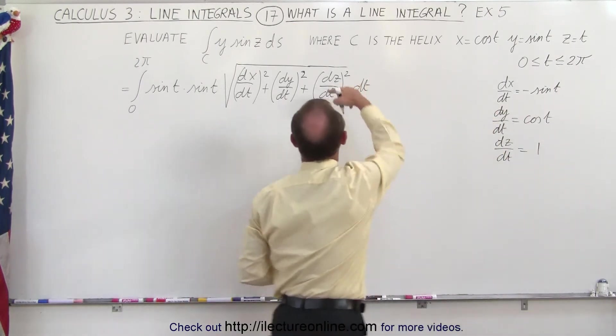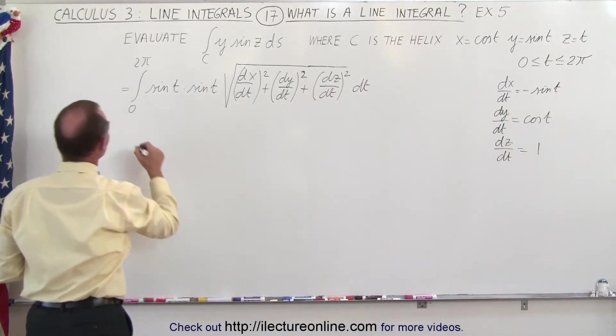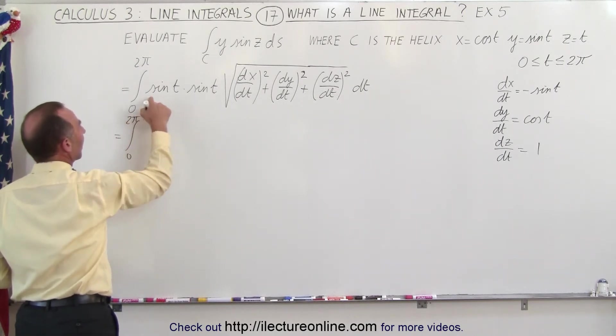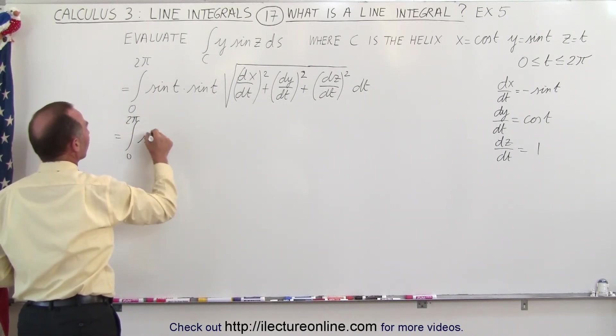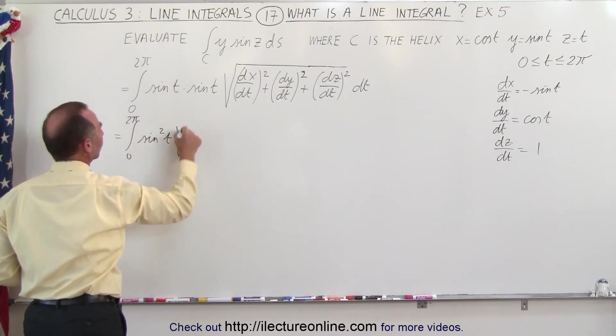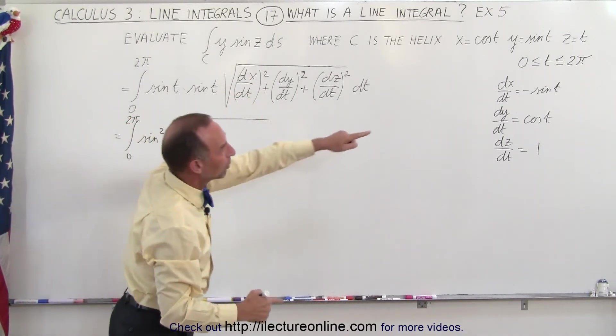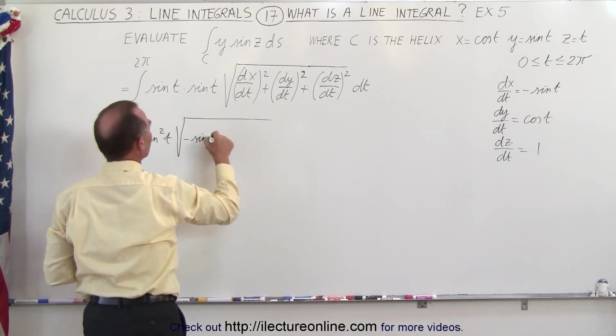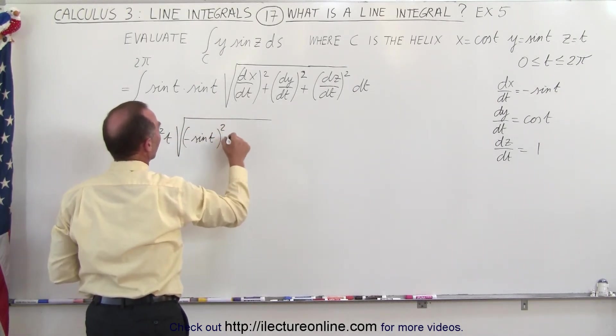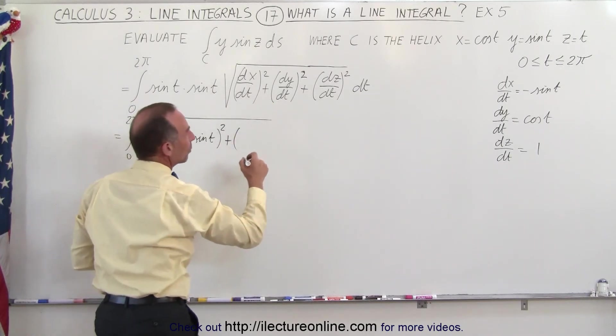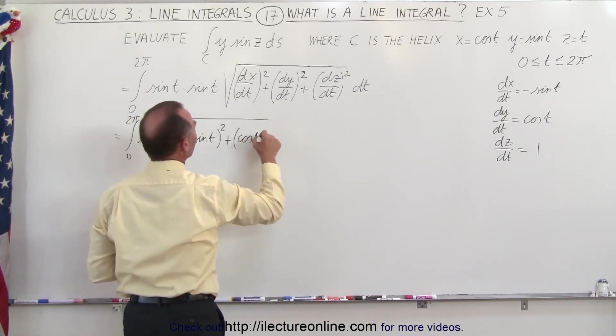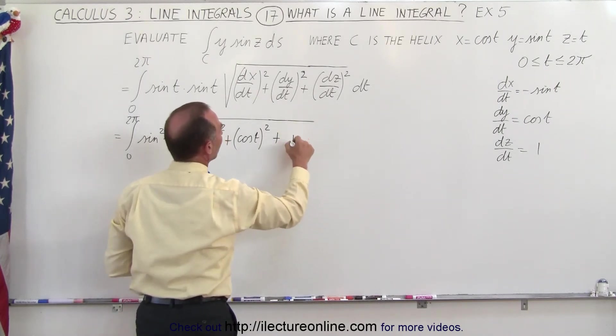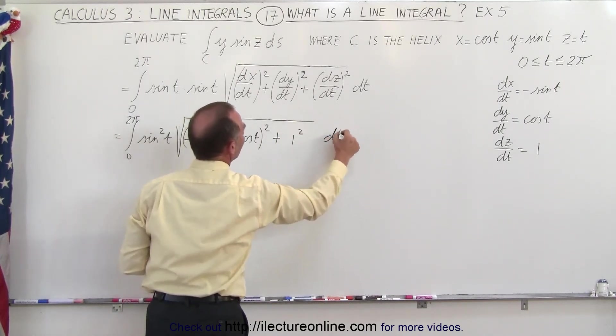And so those can be plugged in here, and we get the following. This is equal to the integral from 0 to 2π times the sine squared of t times the square root of dx/dt squared would be the minus sine of t quantity squared, plus dy/dt, which would be the cosine of t quantity squared, and plus dz/dt, which is 1 squared, times dt.